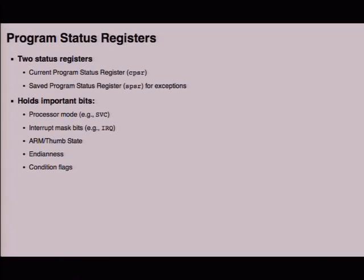ARM has two important program status registers for systems code: the Current Program Status Register (CPSR) and the Saved Program Status Register (SPSR), used for exceptions. These hold the processor mode — for instance, SVC mode — the interrupt mask bits (setting the IRQ bit disables interrupts), ARM versus Thumb state, endianness, and various condition flags.